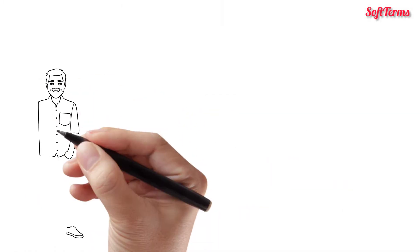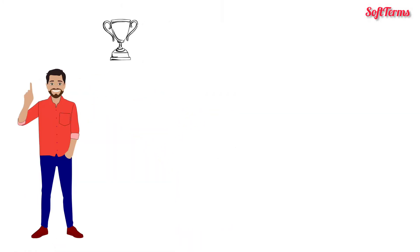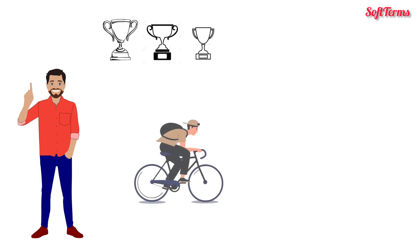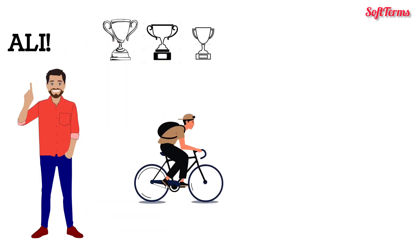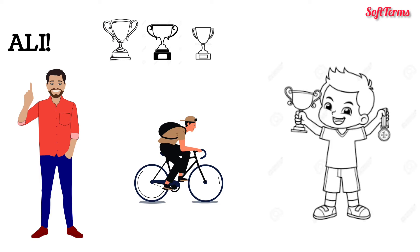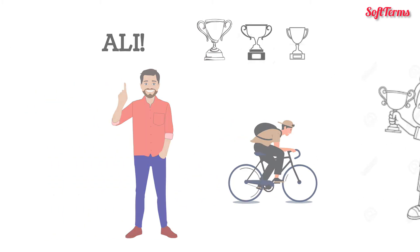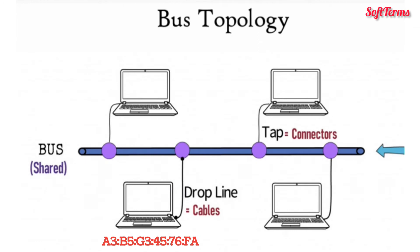Suppose you are distributing prizes. As per the result of the competition, you asked Ali to come on stage for his reward, so only Ali will go and collect the prize. The same is the case in bus topology — only the computer to whom the frame is addressed accepts it.